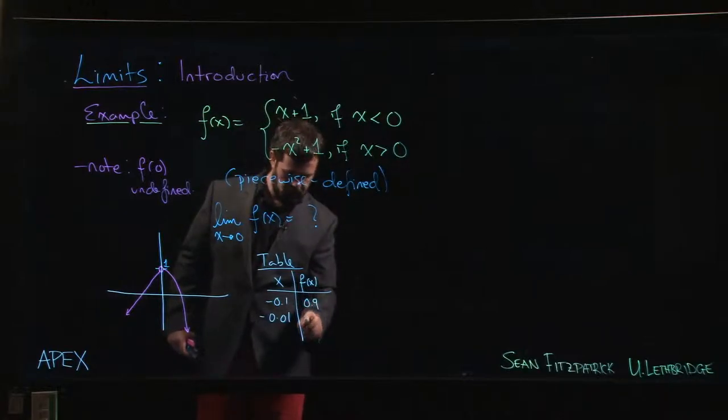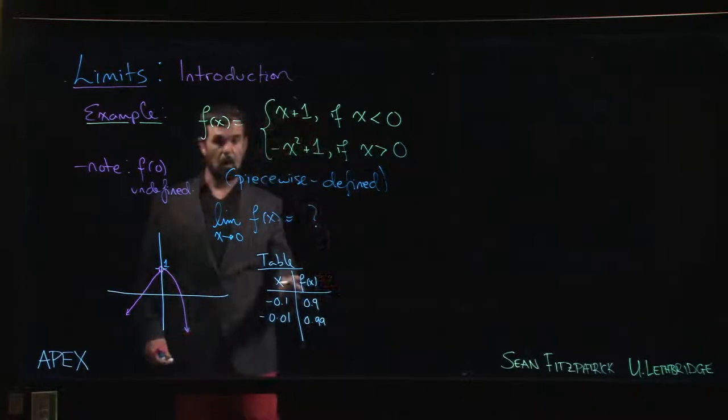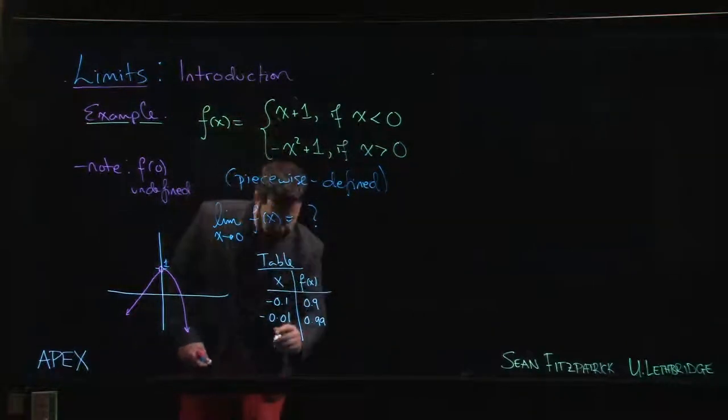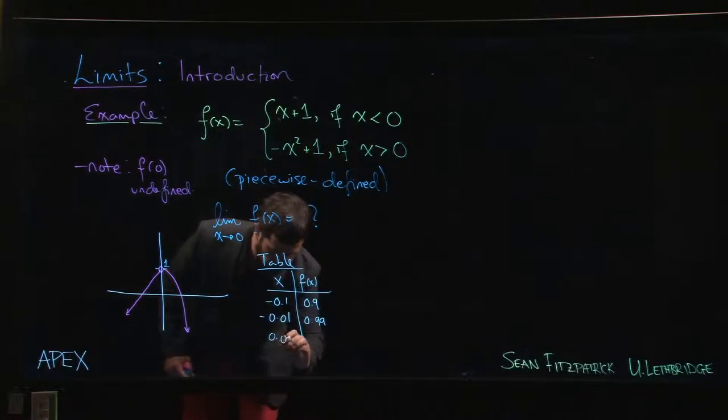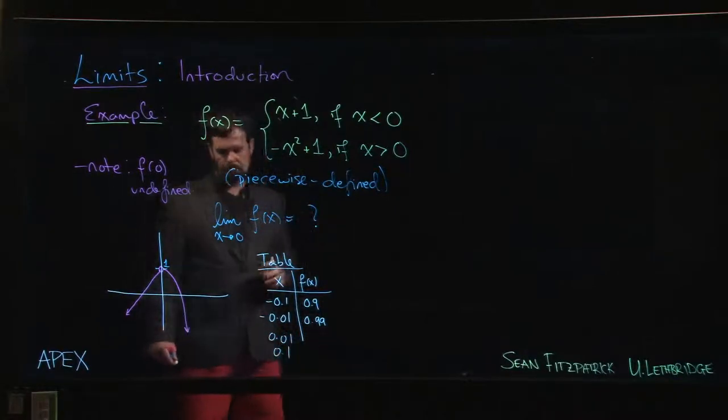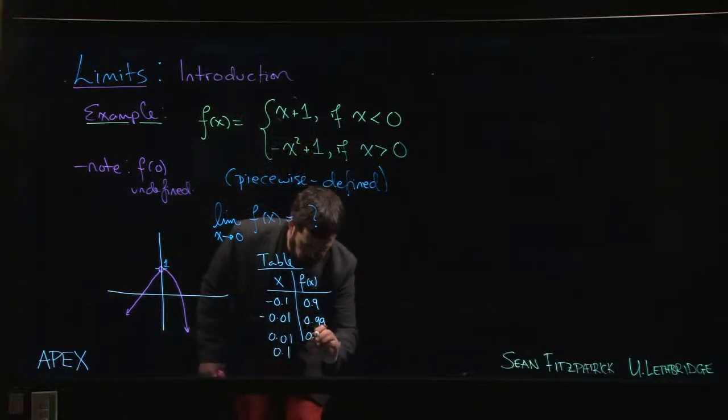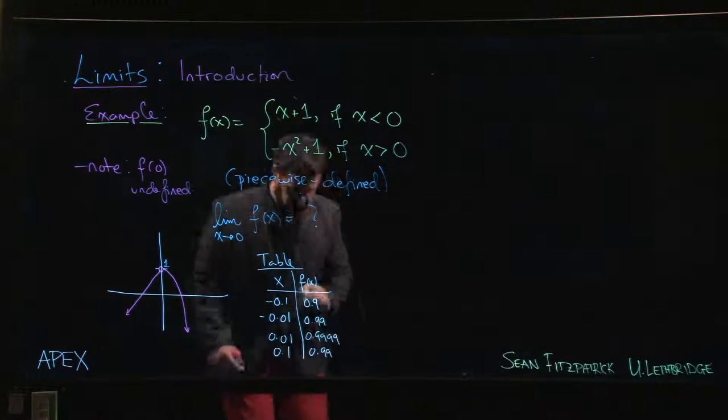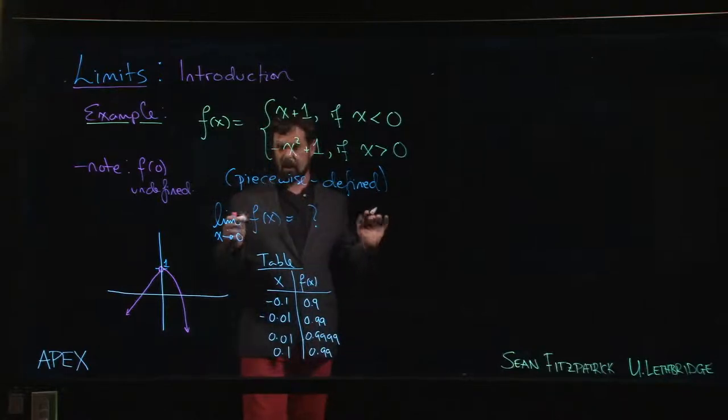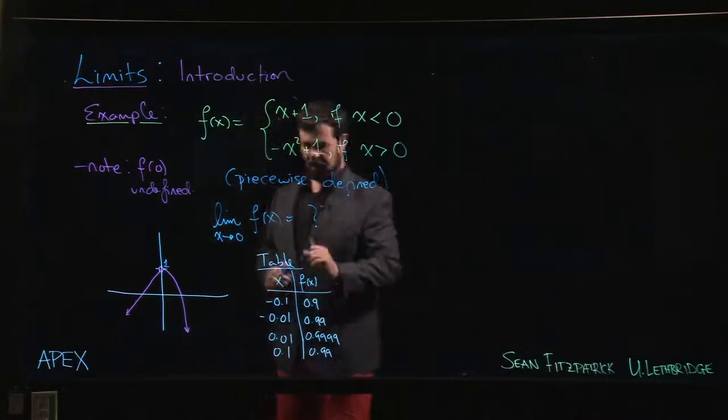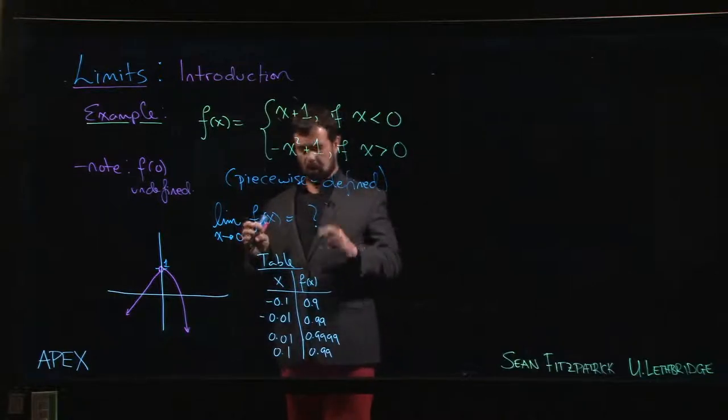You can get as close to zero as you want and you find f of x here we get 0.9, 0.99, and so on. Whereas if you were to look at positive values, well then it's even more dramatic. We're going to get 0.9999, 0.99.